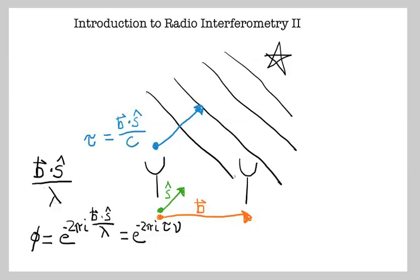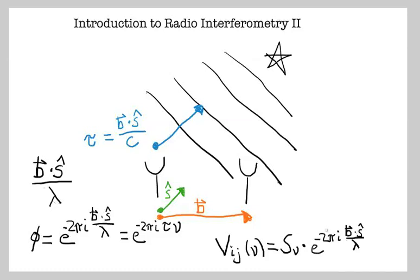For this phase, we can calculate the visibility measured from a single source on the sky. The visibility, as a function of antenna indices I and J at a given frequency, is the source spectrum times the phase term it arrives at. This reflects the changing number of wavelengths between the two antennas as a function of frequency. A baseline has a fixed geometric length, and it's the frequency dependence of the wavelength that gives us a frequency-dependent phase term.